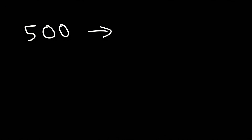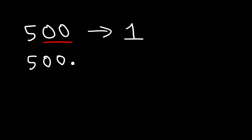What about zeros to the right of a non-zero number, like 500? It all depends on whether there is a decimal point or not. If we do not have a decimal point, the trailing zeros are not significant — so 500 would be only one significant figure. If we do have a decimal point, the trailing zeros are significant, giving three significant figures.